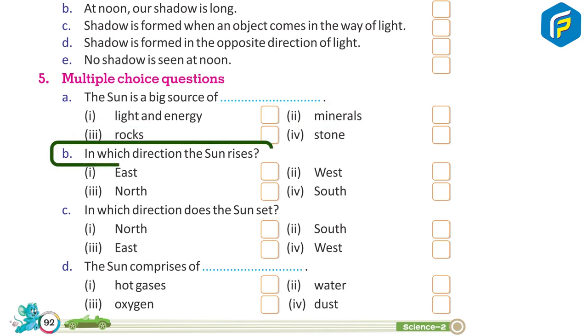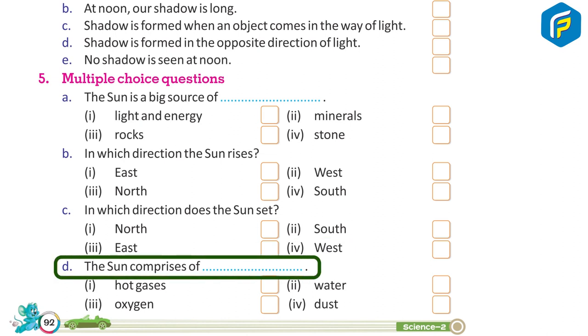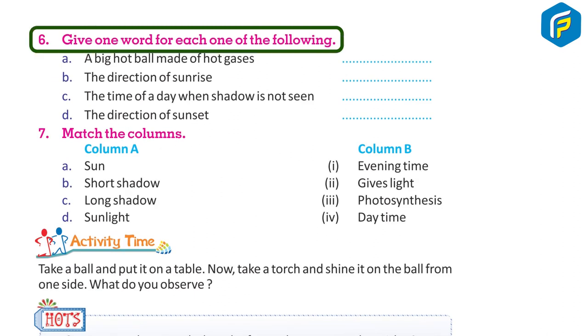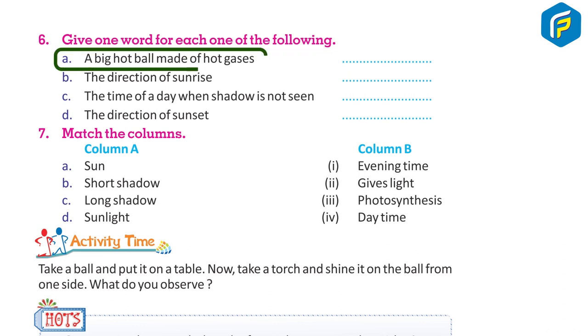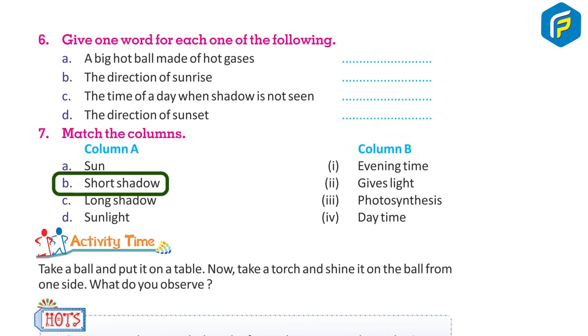5. Multiple choice questions: a) The Sun is a big source of: 1. light and energy, 2. minerals, 3. rocks, 4. stone. b) In which direction does the Sun rise? 1. east, 2. west, 3. north, 4. south. c) In which direction does the Sun set? 1. north, 2. south, 3. east, 4. west. d) The Sun comprises of: 1. hot gases, 2. water, 3. oxygen, 4. dust. 6. Give one word for each of the following: a) a big hot ball made up of hot gases, b) the direction of sunrise, c) the time of a day when shadow is not seen, d) the direction of sunset. 7. Match the columns. Column A: a) sun, b) short shadow, c) long shadow, d) sunlight. Column B: 1. evening time, 2. gives light, 3. photosynthesis, 4. day time.